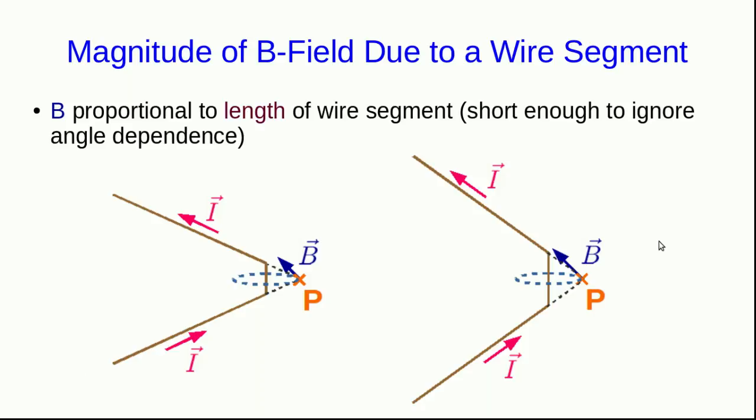We can vary the length of the wire segments that we're looking at. And as long as we use short enough segments that we don't have to worry about the fact that the angle dependence is different at different points along the wire, we find that the magnetic field is proportional to the length of a wire segment that's producing the B field.